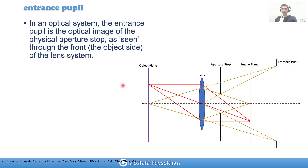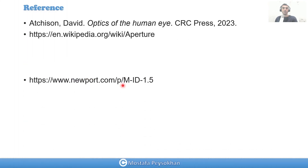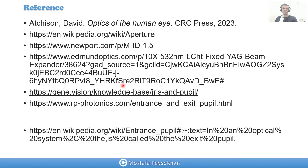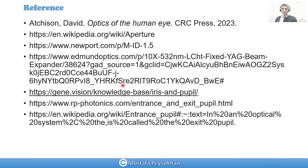The optical system plays a very important role, even in the eye. In the next video, we're going to talk about what the entrance pupil, exit pupil, and stop of our eye's optical system actually are. Here are some references I used — thank you very much.